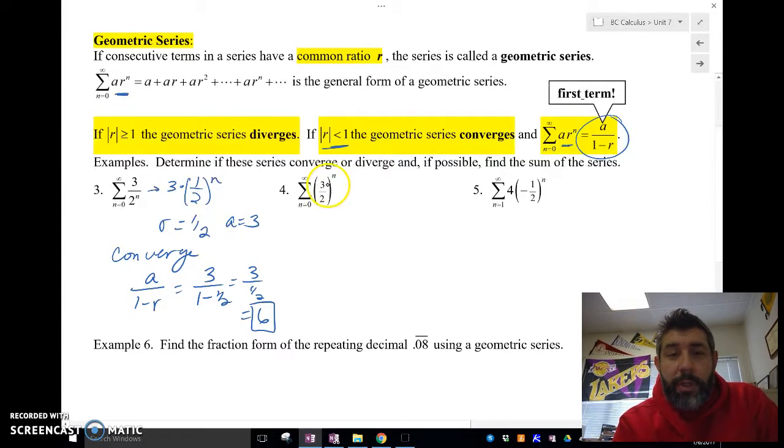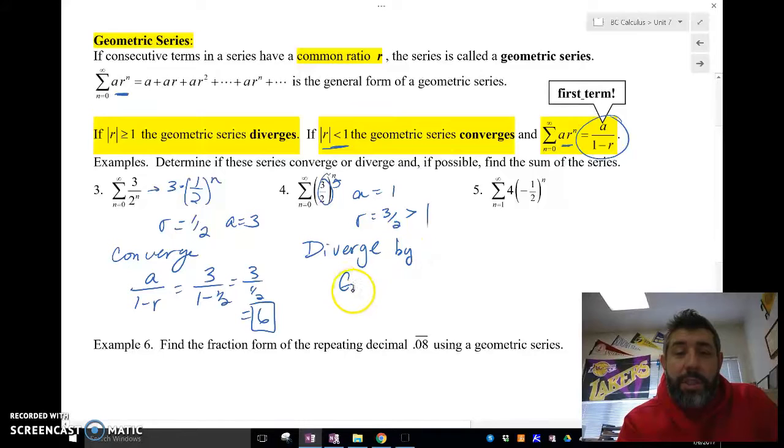Now, if we look at this one, this again is a geometric series. Normally we're looking for a fraction or something raised to a power. This a is equal to 1, and the r is equal to 3 halves. Well, 3 halves, the absolute value of that is going to be greater than 1. So this is going to diverge. And we're going to say this is going to diverge by the geometric series test, GST.